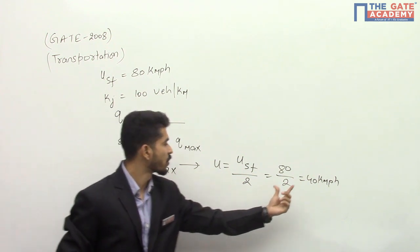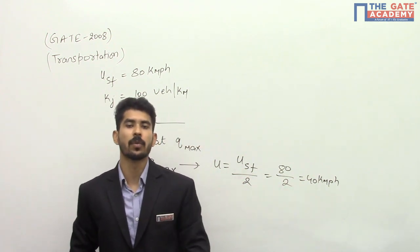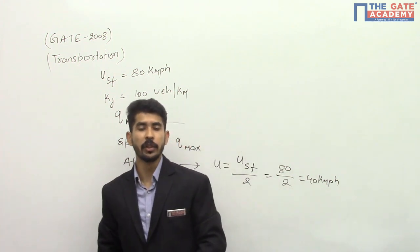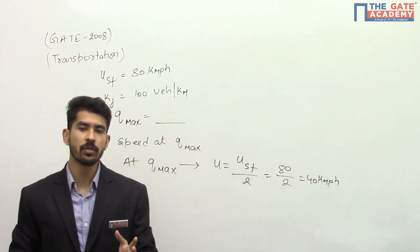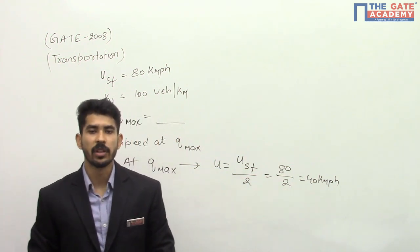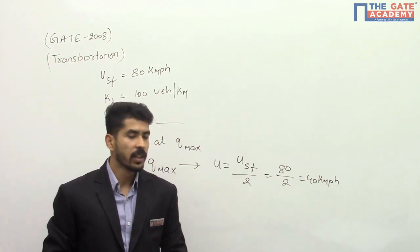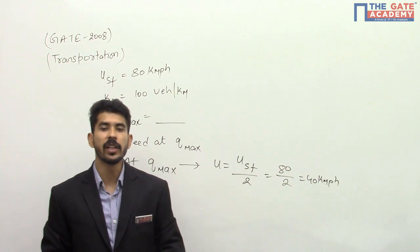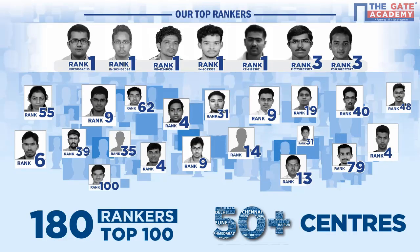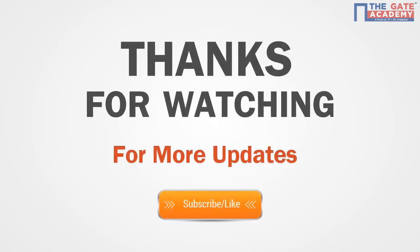Since the speed at maximum flow is 40 kmph, and only one option has a speed of 40 kmph, that is option D. So there is no need to solve the entire question — by simply looking at the options, you can save time in the examination. The answer is option D: 2000 vehicles per hour and 40 kmph.